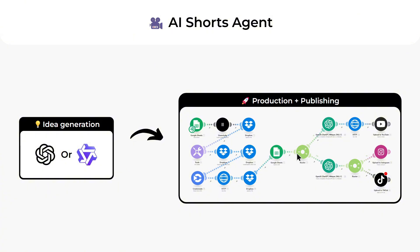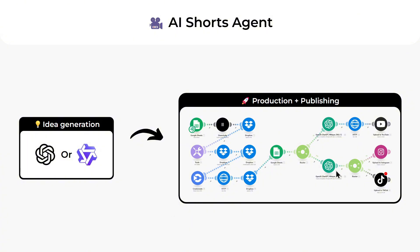The agent publishes the video on all your social media platforms. If the video uploads to YouTube, it generates a longer description with hashtags and emojis. If it goes to Instagram or TikTok, it generates a shorter caption also with hashtags and emojis — automating the entire process from generating the first ideas to publishing the final video.